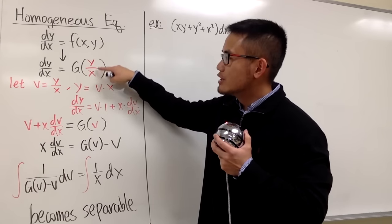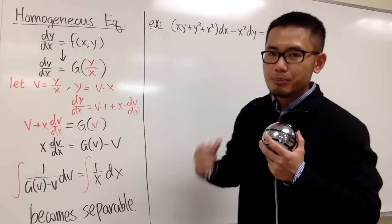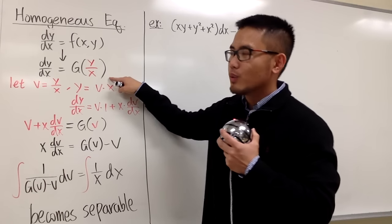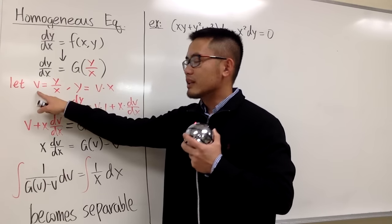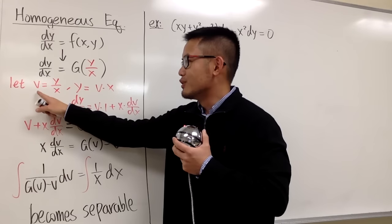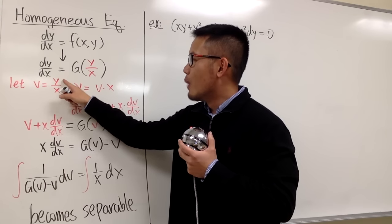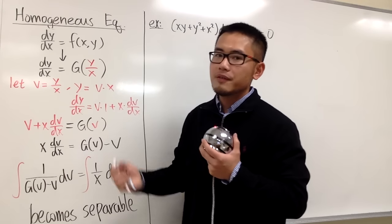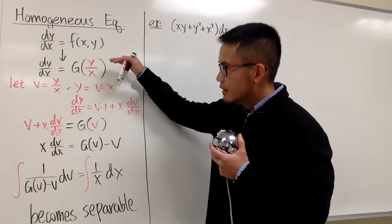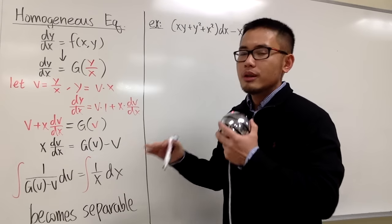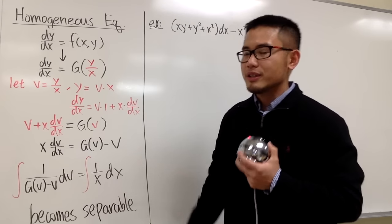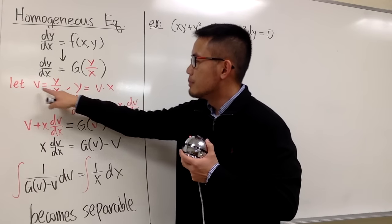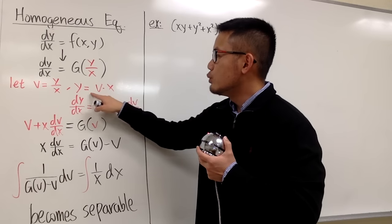y over x has to be together as the one input. If we can make this happen, what we are going to do is let v — just another variable, usually called v — equal to y over x. Then we figure out what dy/dx is in terms of v as well. Since v equals y over x, multiplying x on both sides gives y equals v times x.